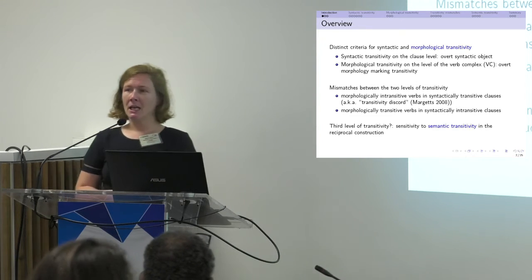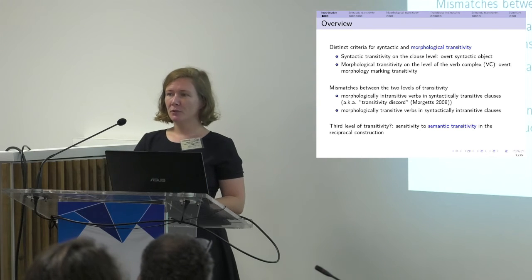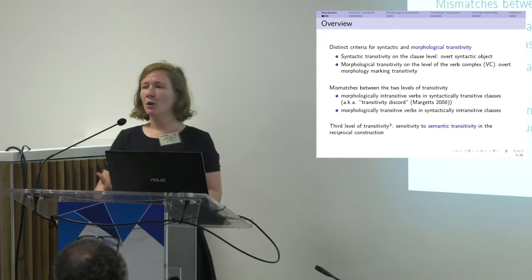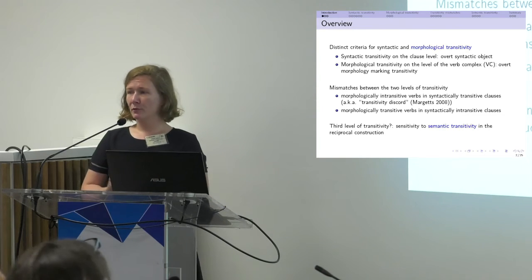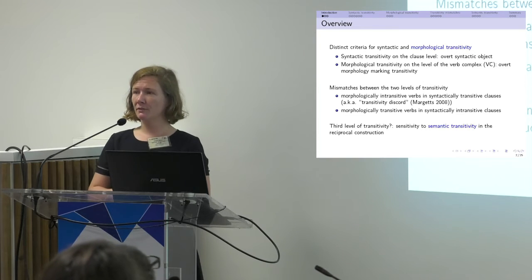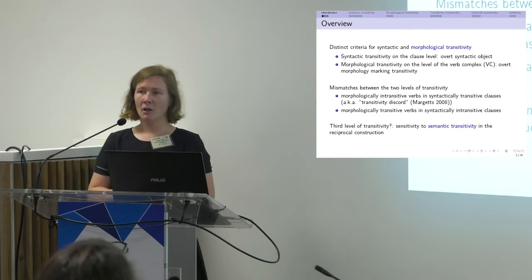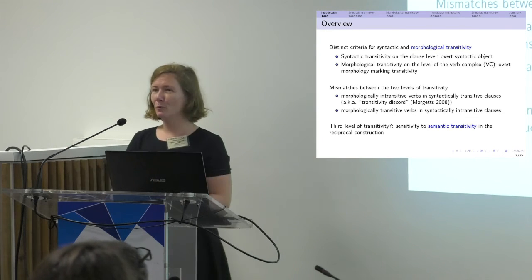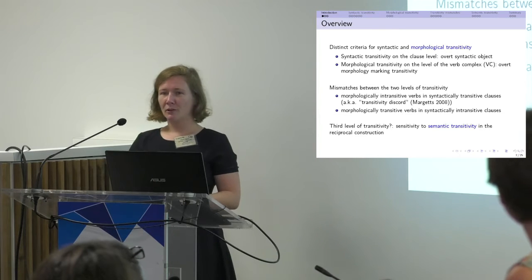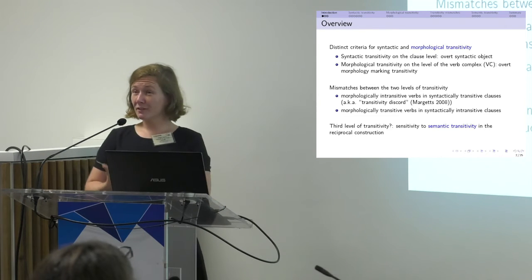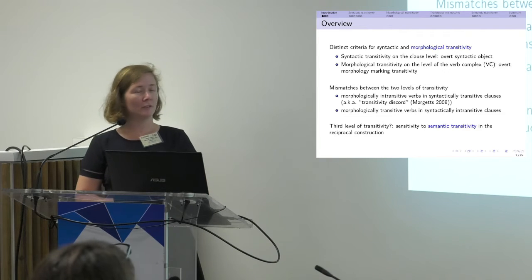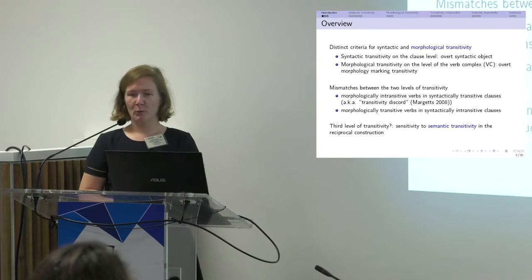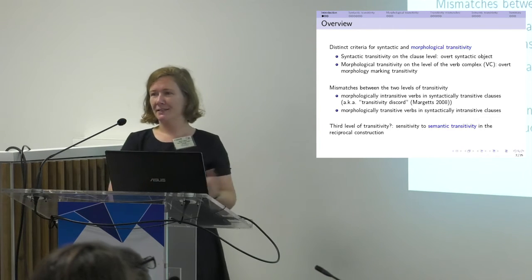I'll be presenting on Monoalu and their distinct criteria to distinguish syntactic and morphological transitivity — syntactic transitivity on the clause level, looking at whether or not there's an overt syntactic object, and morphological transitivity applying on the level of the verb complex, looking at whether or not there's overt marking of transitivity. In Monoalu, the verb complex is more precisely described as a predicate with subject agreement that is sensitive to person.